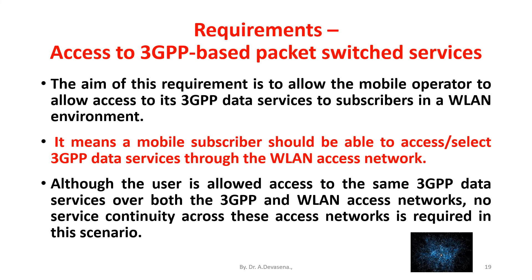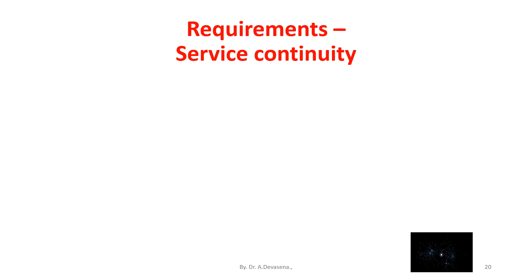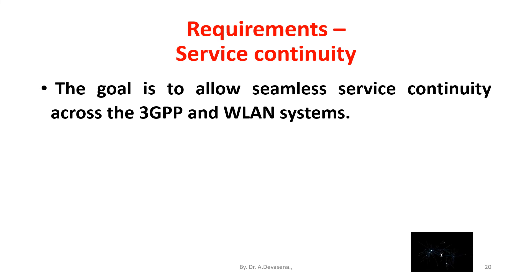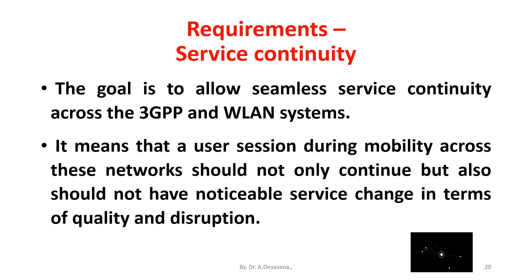It means a mobile subscriber should be able to access or select 3GPP data services through the WLAN access network. Although the user is allowed access to the same 3GPP data services over both the 3GPP and WLAN access networks, no service continuity across these access networks is required in this scenario. The fourth requirement is service continuity — the goal is to allow seamless service continuity across the 3GPP and WLAN systems, meaning a user session during mobility across these networks should not only continue but also should not have noticeable service change in terms of quality and disruption.